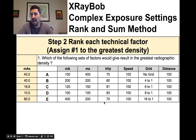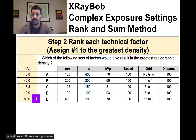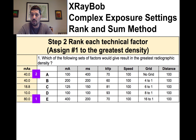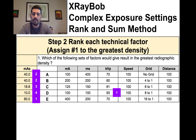Complex exposure settings — one method is called the Rank and Sum method. It is quick and dirty, it's a nice cheat, but you may need to do it both ways. You may use the Rank and Sum method first and then do it the correct way second, or compare your answers. The more precise method I'll show you after the Rank and Sum method.